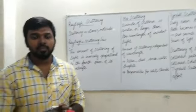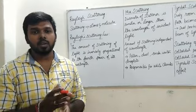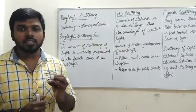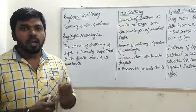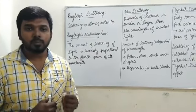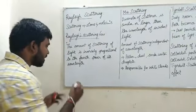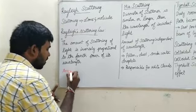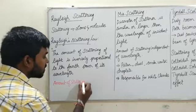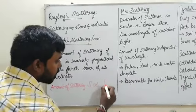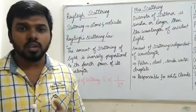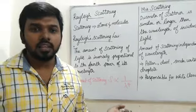Rayleigh scattering is the scattering of sunlight by atoms and molecules present in the earth's atmosphere. This scattering follows an important law which states that the amount of scattering of light is inversely proportional to the fourth power of its wavelength. So according to this law, the shorter the wavelength, the more it scatters.